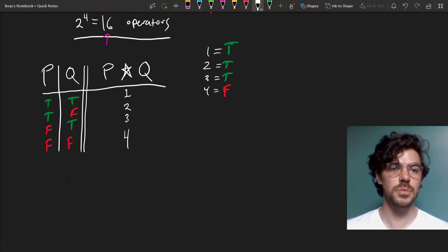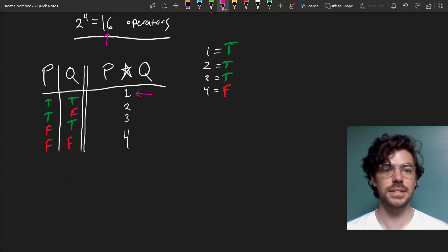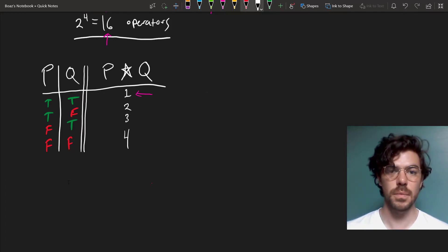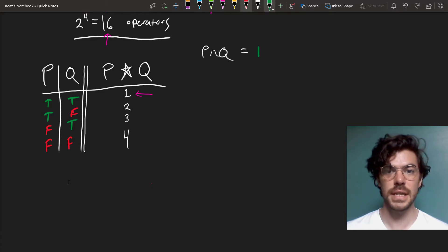Now we've already seen a truth table that just makes the first value here true and the rest false, and that's the truth table for AND. I'm going to erase this. So P AND Q equals T on 1 and false for all the rest.